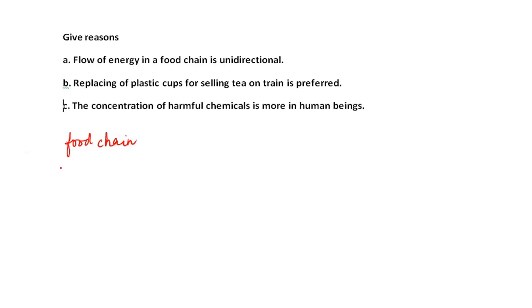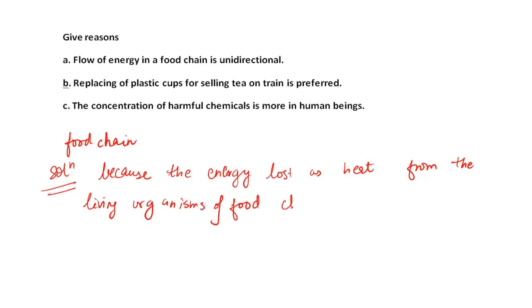So how will you write this answer for part A? What you can write is the flow of energy in ecosystem is unidirectional, and then continue with because the energy lost as heat from the living organisms of food chain cannot be reused by plants.